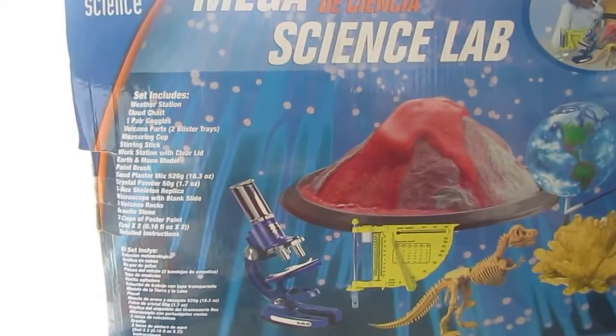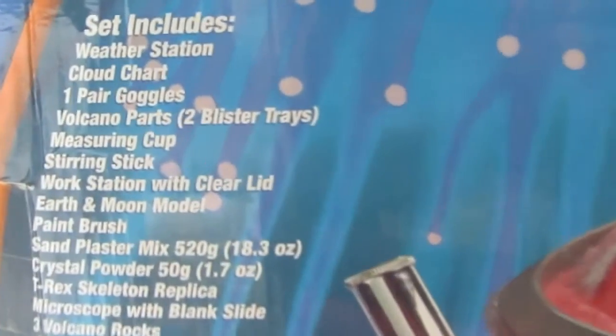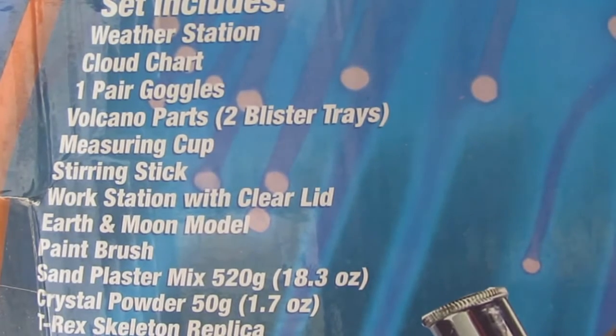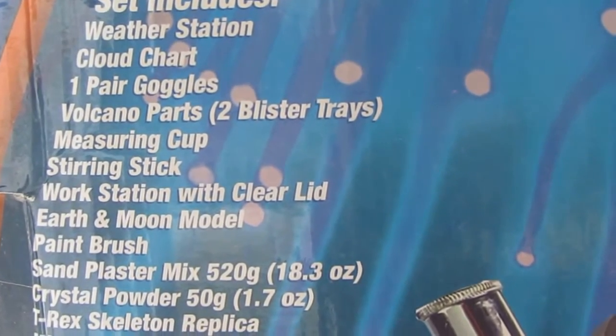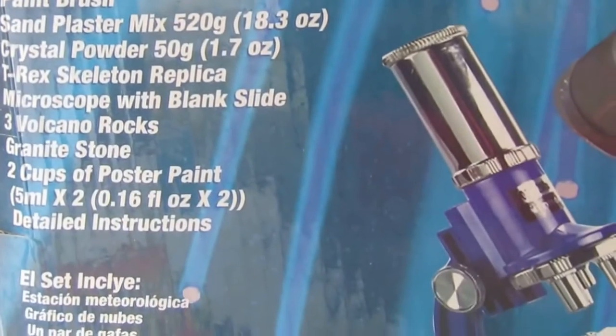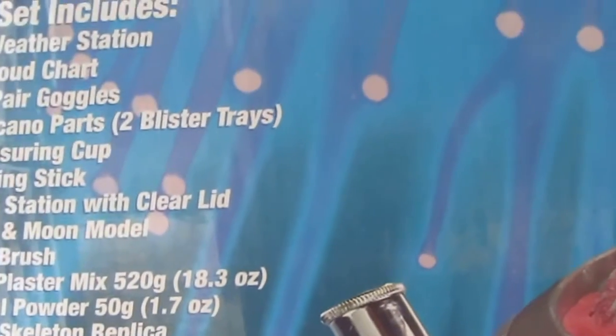And it says that it includes the weather station, a cloud chart, a pair of goggles, volcano parts, measuring cups, things of that nature. And it also comes with a little microscope.